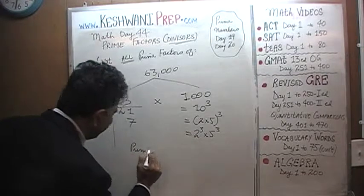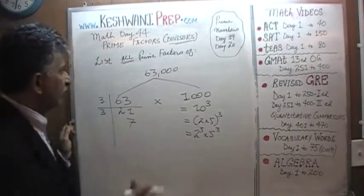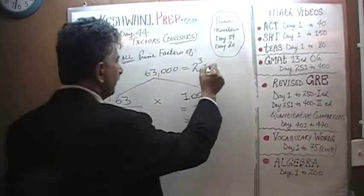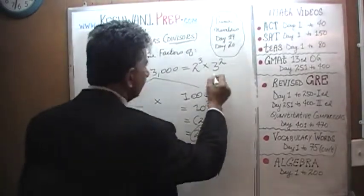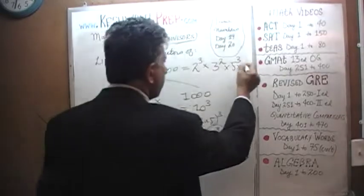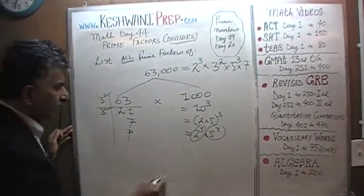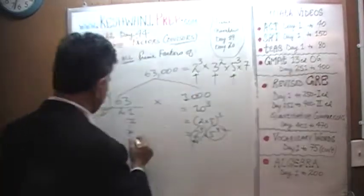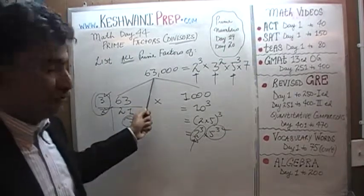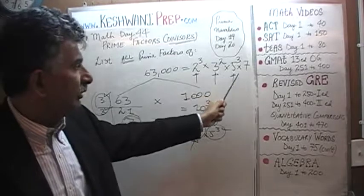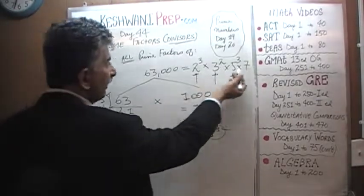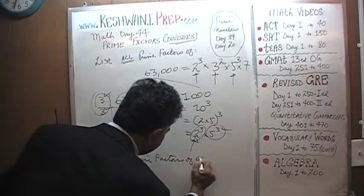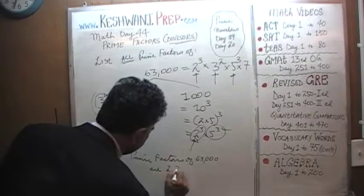Therefore 63,000 can be written as 2 cubed times 3 squared times 5 cubed times 7. Let's verify: we have 2 cubed, 3 squared, 5 cubed, and 7. So 63,000 is the product of 2 cubed times 3 squared times 5 cubed times 7, and therefore the prime factors of 63,000 are 2, 3, 5, and 7.